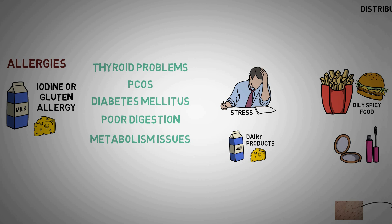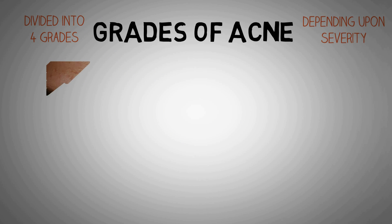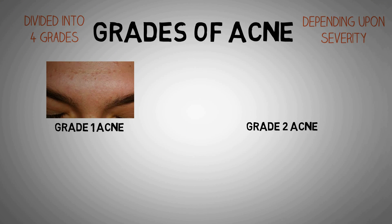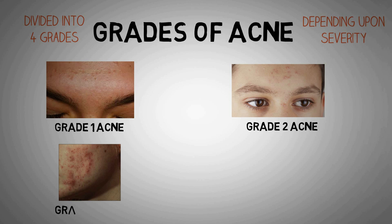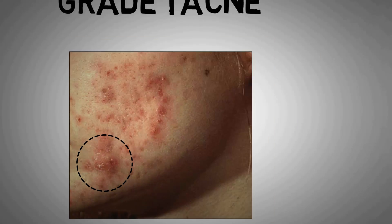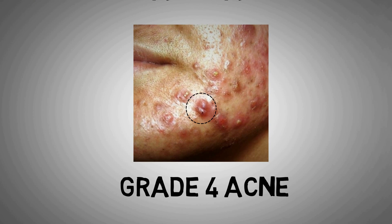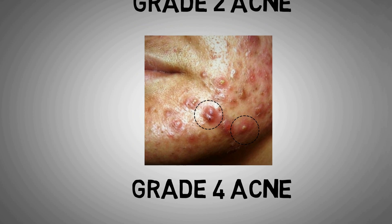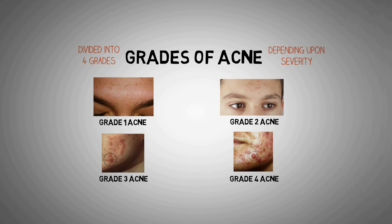Now we have understood how acne is formed and its exaggerating factors. It is very important to understand the 4 grades of acne, as different grades have different treatment options. Grade 1 includes comedones and few papules — raised lesions less than 1 cm. Grade 2 includes whiteheads, also known as pustules, which are small pus-filled acne. Grade 3 is when you start developing nodules — solid red raised lesions more than 1 cm with active inflammation. Grade 4 is the most severe, with nodules and cysts, marked inflammation, and permanent scarring.